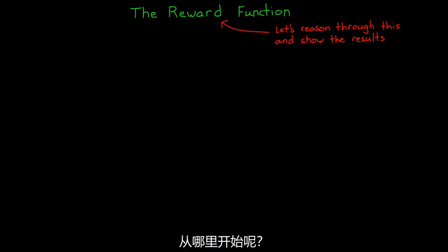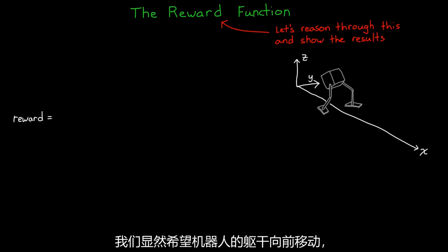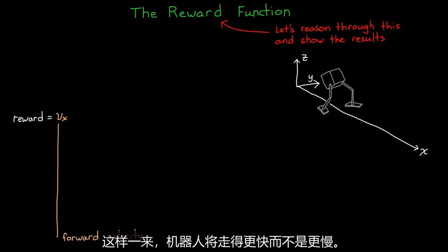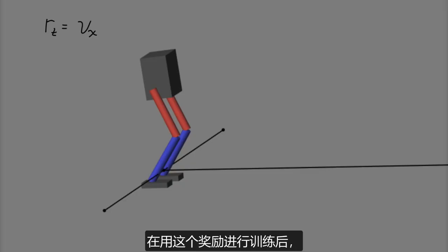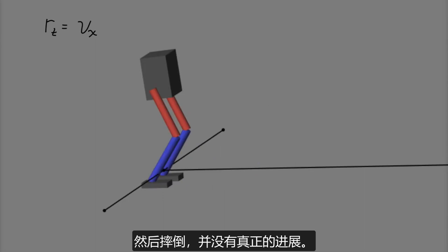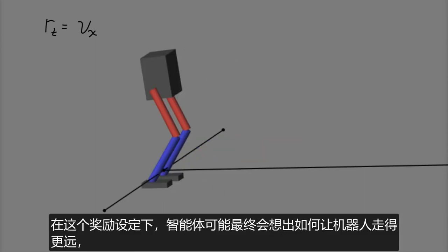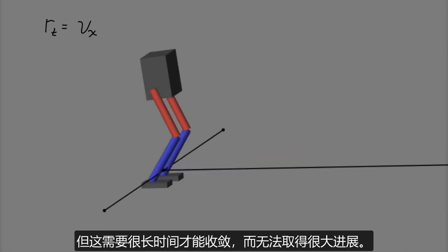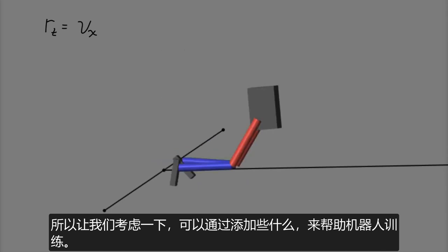Alright, so on to the reward. Where to start? We obviously want the body of the robot to move forward, otherwise it's just going to stand there. But instead of distance, we can reward it for its forward velocity. That way there's a desire for the robot to walk faster rather than slower. And training with this reward, we can see that the robot dives forward to get that quick burst of speed at the beginning. And then it falls over and doesn't really make it anywhere. Now, it may eventually figure out how to make it further with this reward, but it was taking a long time to converge and not making a whole lot of progress. So let's think about what we can add to the reward to help with training.